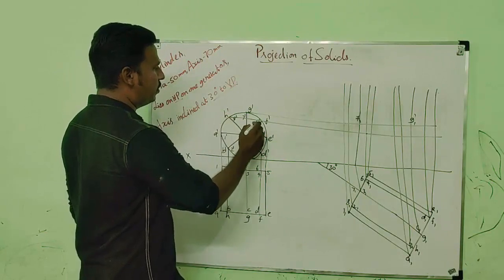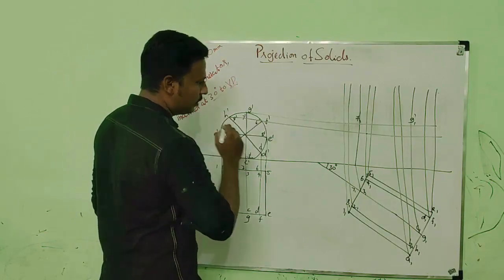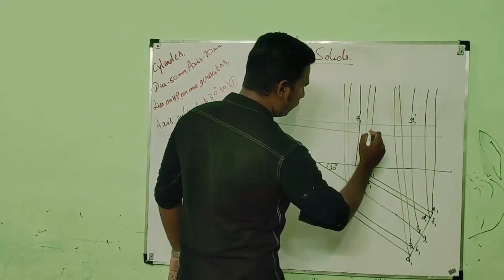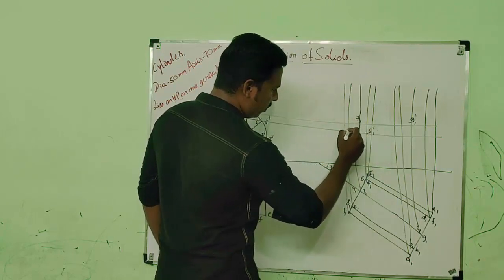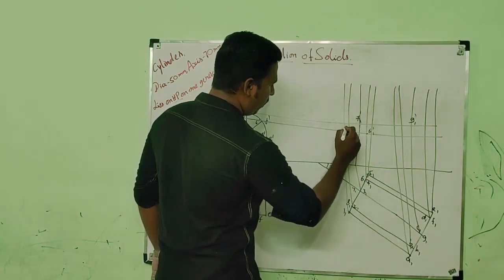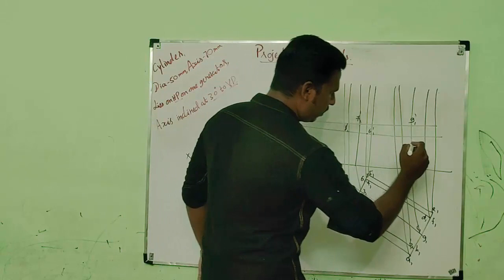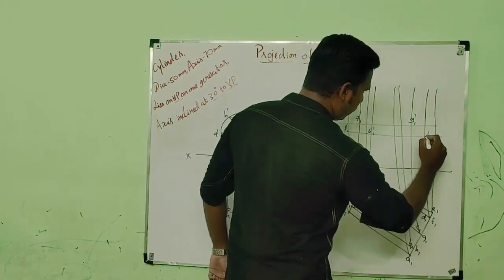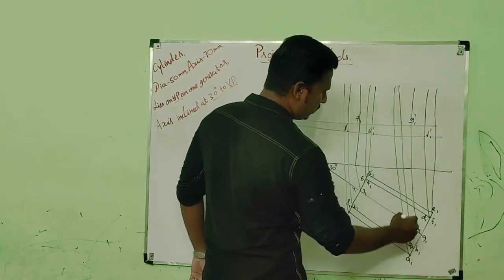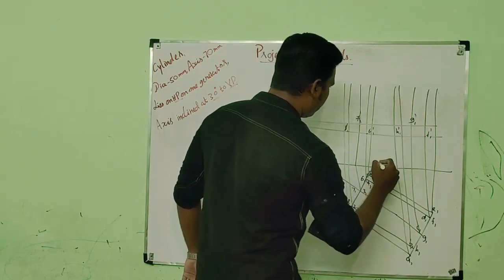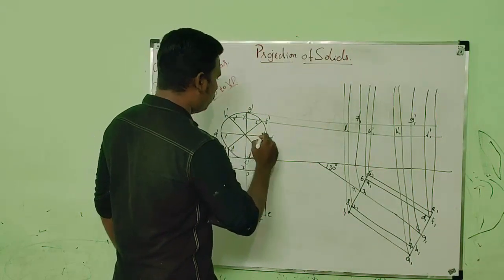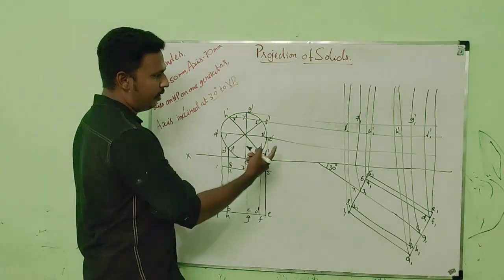6, 8. This will correspond to 6, 8. F is here. F is here. And H is here. Then this one corresponds to 1, 5, A and E.